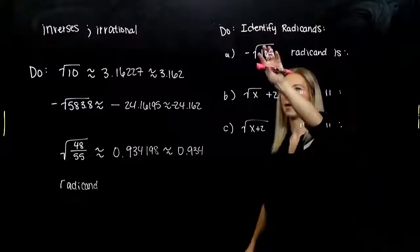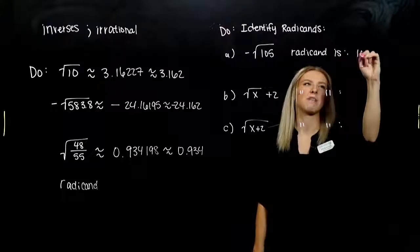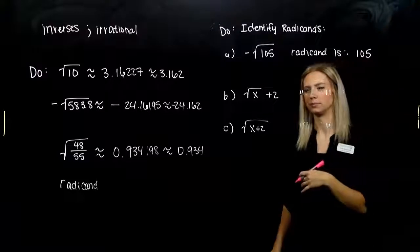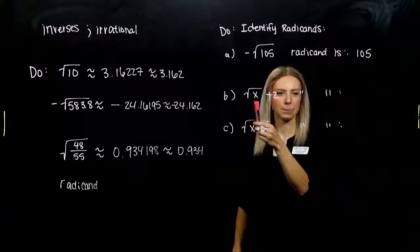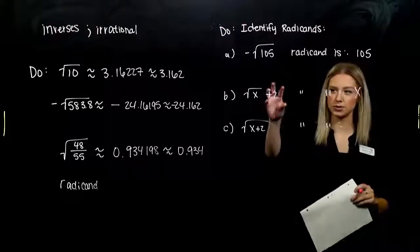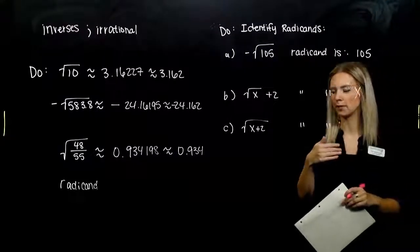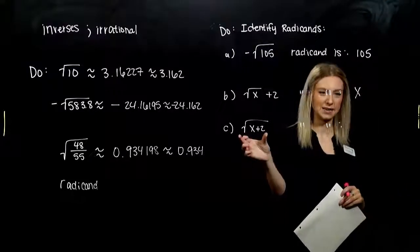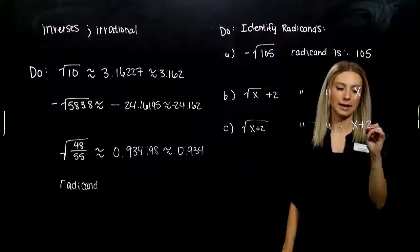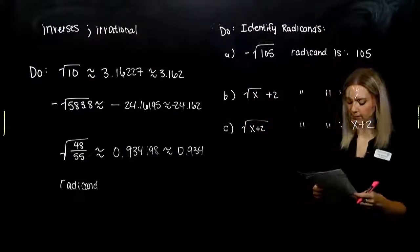For the first, what value or expression do we have underneath that radical symbol? 105. So the radicand in that case is 105. We need to know that term. For part B, what is the radicand? Simply just x, because 2 isn't grouped inside the radical symbol — it's hanging on the outside. But for part C, 2 is included underneath the radical, so that entire radicand is x plus 2, that whole expression under there.